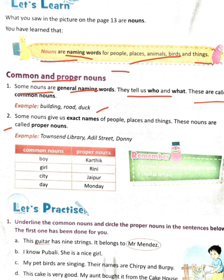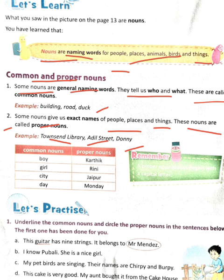Some nouns give us the exact name of a person, place, or thing. These nouns are called proper nouns. For example, from the earlier picture, the library's name was Townshend Library, the street's name was Adel Street, and the duck's name was Donny. So Donny is the exact name of that duck — when we say Donny, it refers to only that duck. Similarly, Adel Street refers only to that street, and Townshend Library refers only to that library.